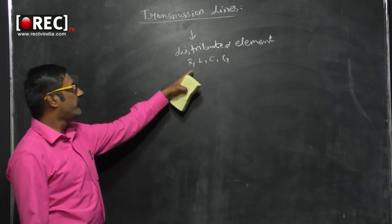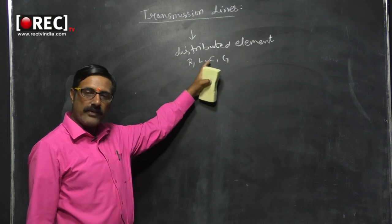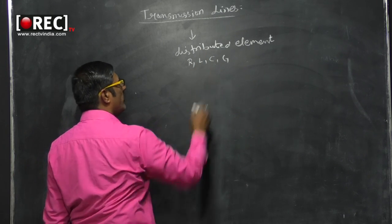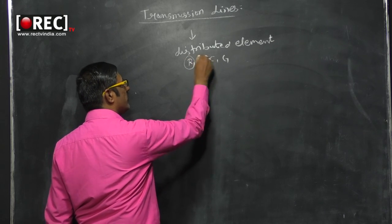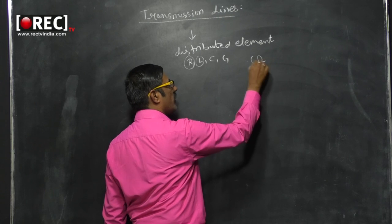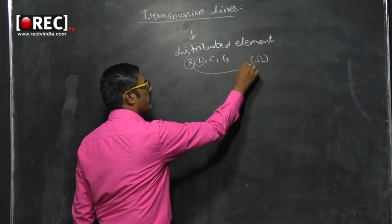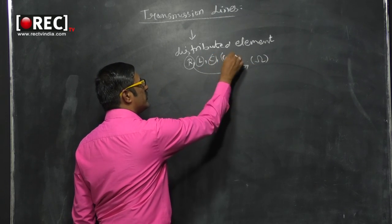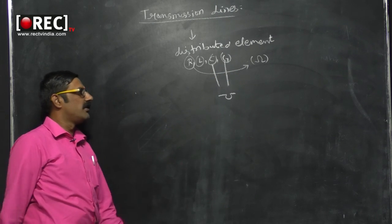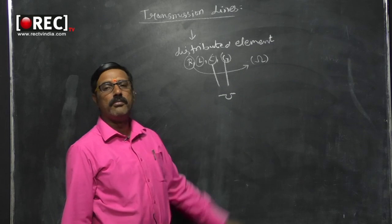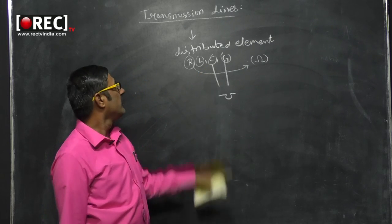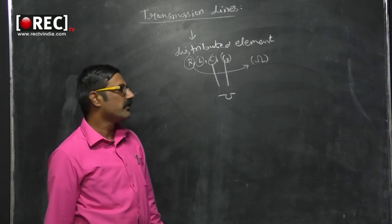R and L are series elements because they are measured in ohms. C and G are measured in mho (siemens). G and C are considered to be parallel elements, while R and L are considered to be the series elements.